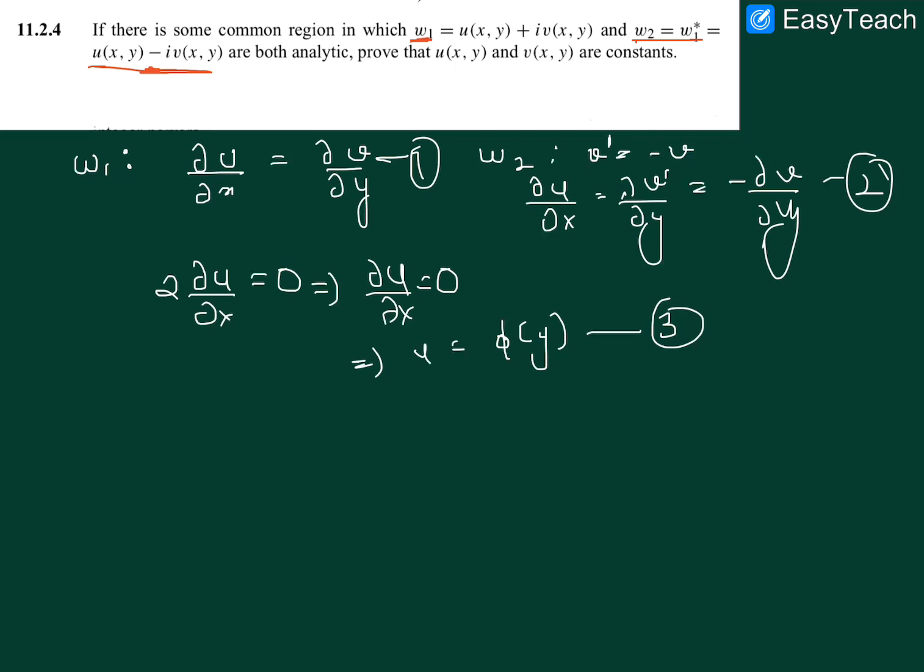Now we apply the second Cauchy-Riemann condition, that is du by dy is minus of dv by dx. That is our equation 4, and this is still for w1. And for w2 we have du by dy